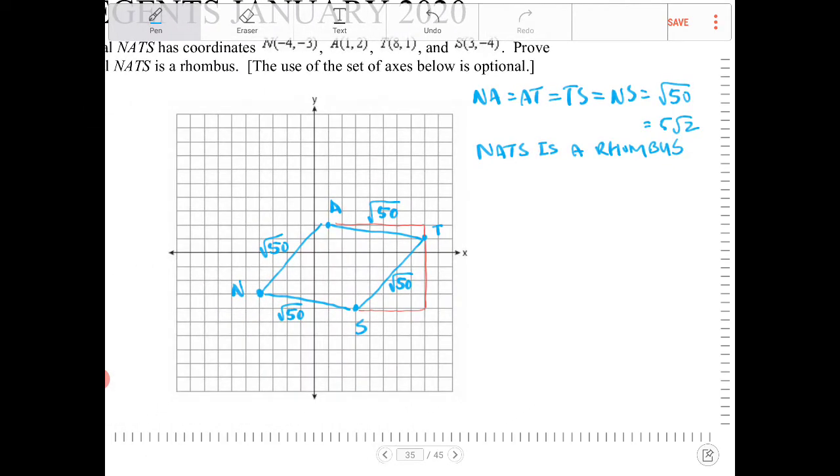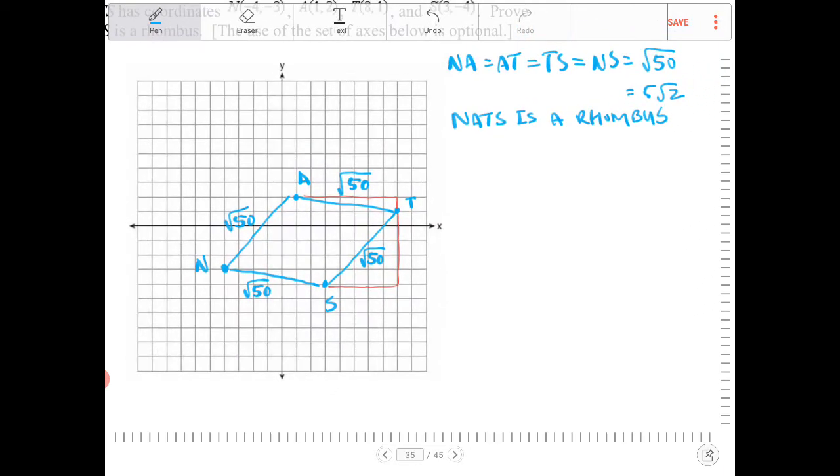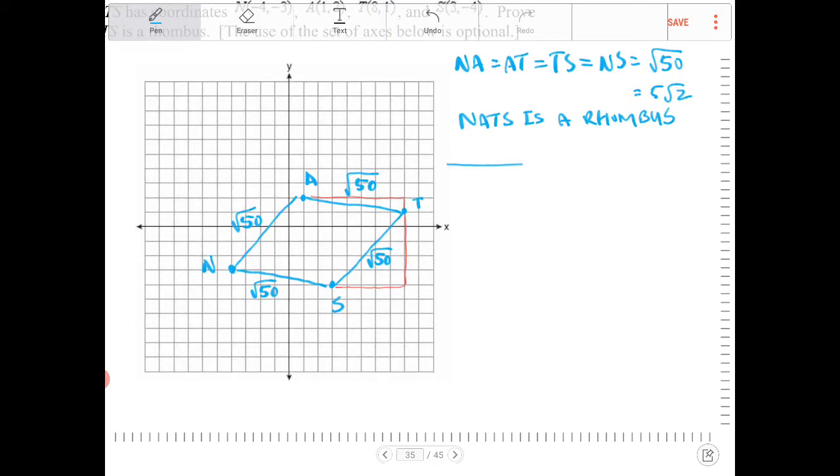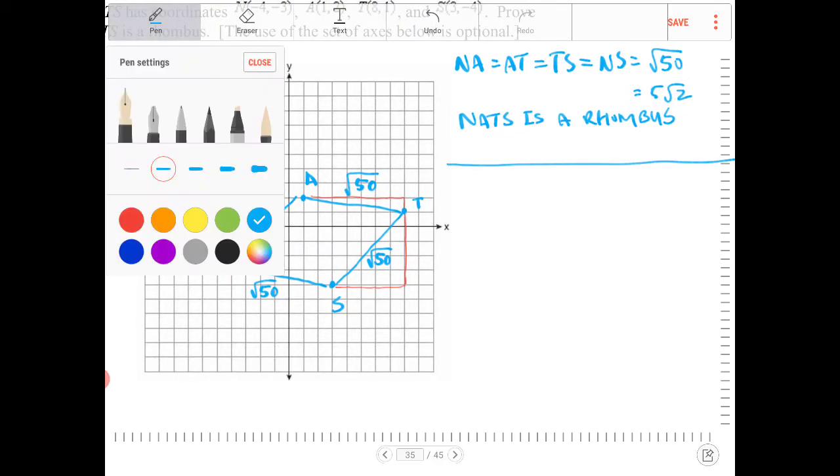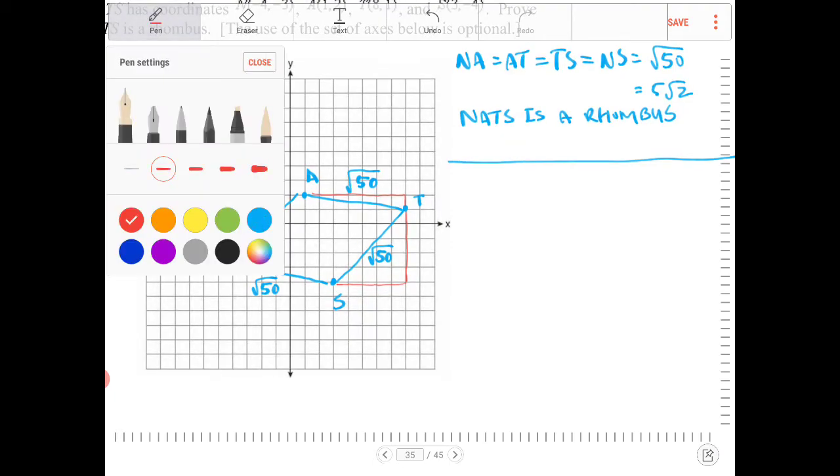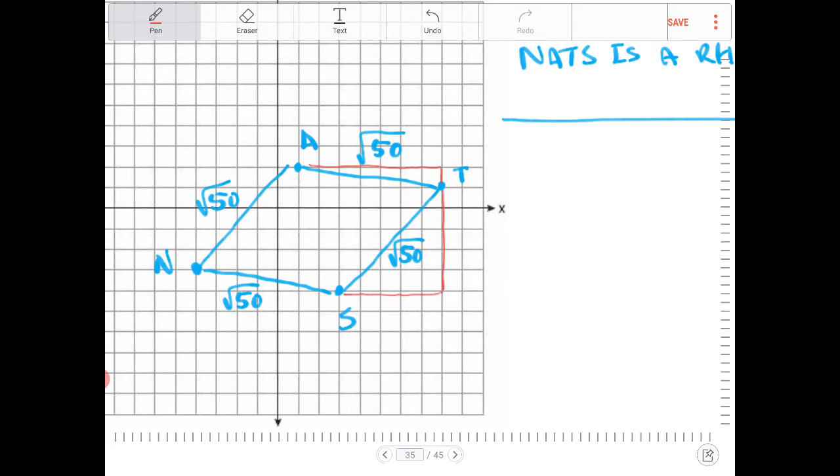Alternatively, what you could have also done is you could have found the slopes of A-T. Being that I did this so quickly, I'm going to solve it another way. This is an alternative now, okay? So you could have also done the following. I'm going to use another color. I'm going to draw this in red.